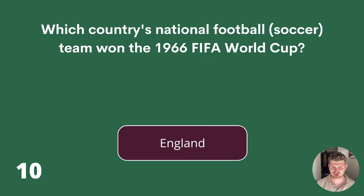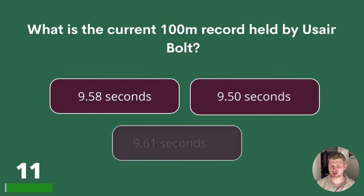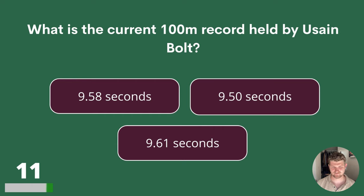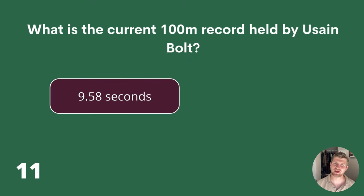Question 11. What is the current 100 metre world record held by Usain Bolt? 9.58 seconds, 9.50 seconds or 9.61 seconds? The answer is 9.58 seconds.